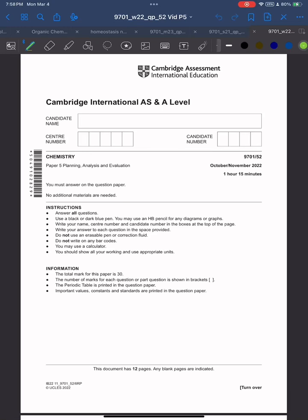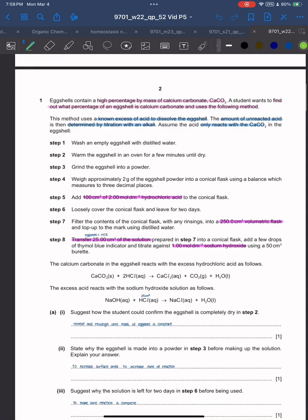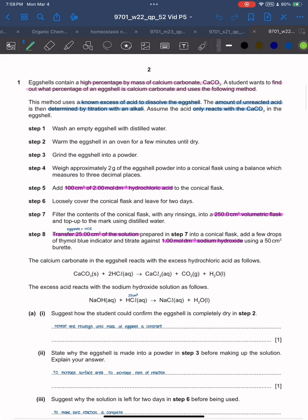Hi guys, I'm going to discuss Paper 5 for October November 2022, Paper 52. Question 1: eggshell contains high percentage by mass of calcium carbonate CaCO3. A student wants to find out what percentage of an eggshell is calcium carbonate using the following method.